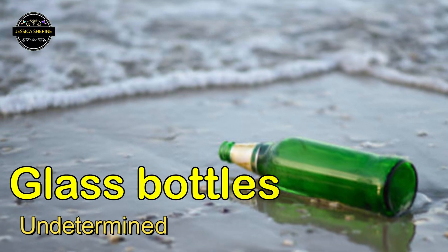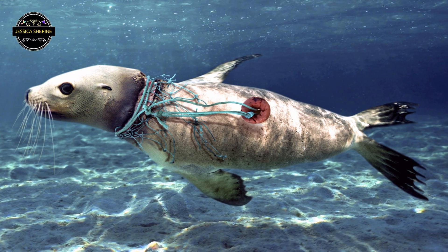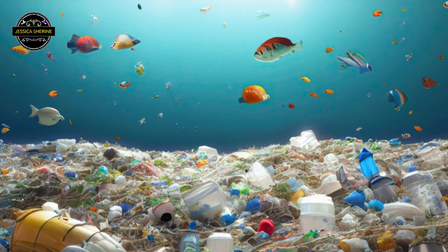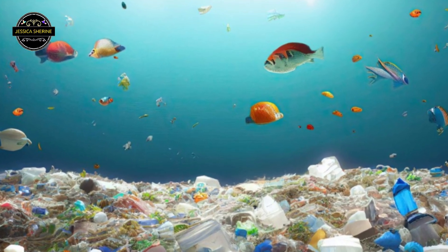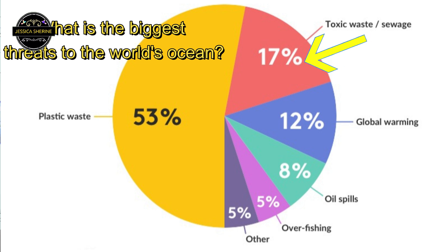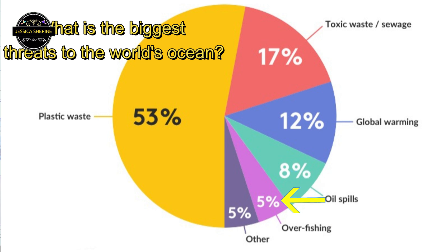The waste that we put on land is carried away by the waves to the ocean, which harms people and animals — land waste reaching the ocean is bad for us. Now for the data: what is the biggest threat to the world's oceans? 53% is plastic, 78% is toxic waste and sewage, 12% is global warming, 8% is oil spills, 5% is overfishing, and 5% is other.